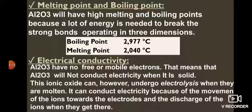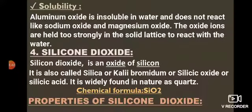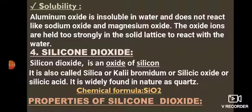During electrolysis, positively charged ions move toward the negative electrode — having already lost electrons, they now gain electrons. Negatively charged ions move toward the positive electrode — having gained electrons, they now lose them. A chemical change occurs through which electric current passes. Solubility: aluminium oxide is insoluble in water and does not react with water, as the oxide ions are held too strongly in the solid lattice. All three ionic oxides allow electric current in the molten state but have little or no solubility in water.